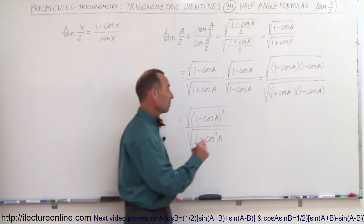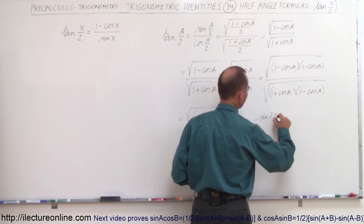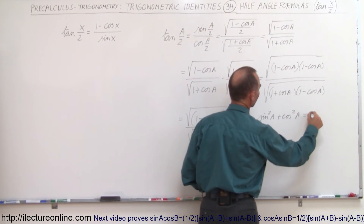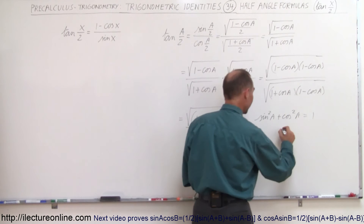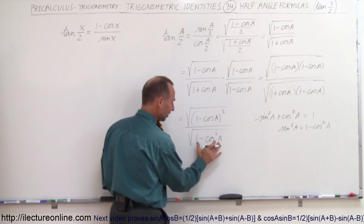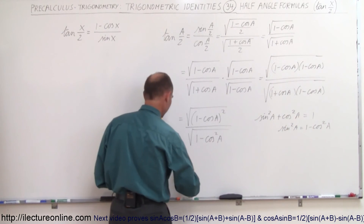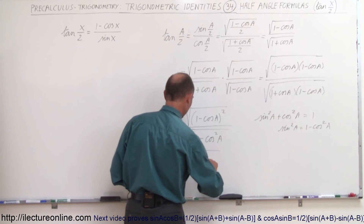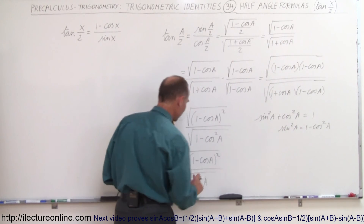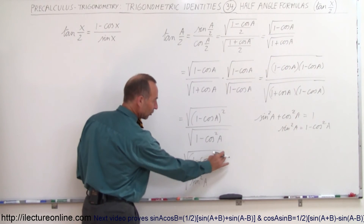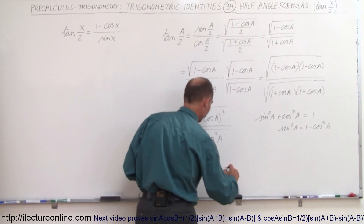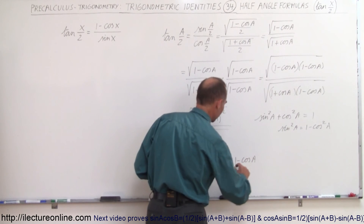Now for the denominator, we have to remember that sin²(a) plus cos²(a) equals 1, which means that sin²(a) can be written as 1 minus cos²(a). So we can replace the denominator with sin²(a). This now becomes the square root of the quantity (1 minus cos(a)) squared, divided by the square root of sin²(a). In the numerator, the square negates the radical, so this can be written as (1 minus cos(a)) divided by sin(a).